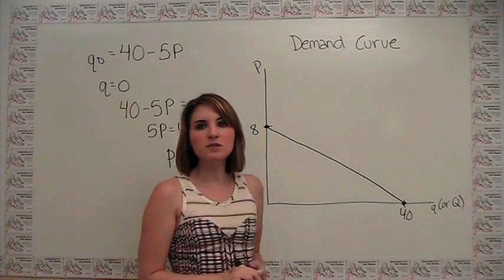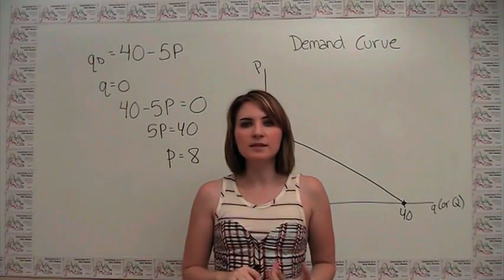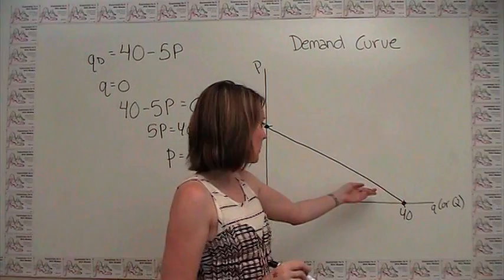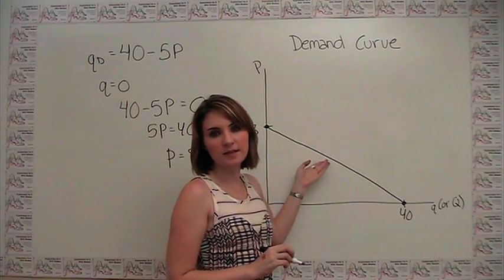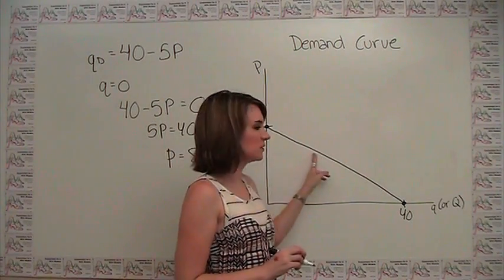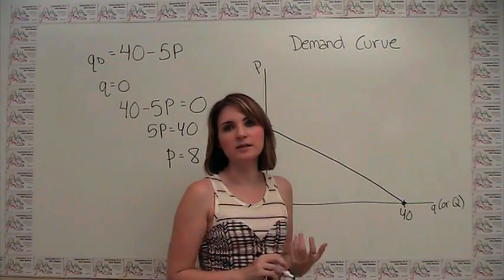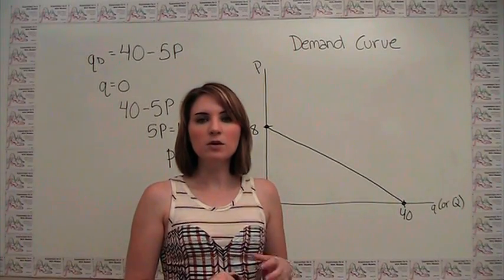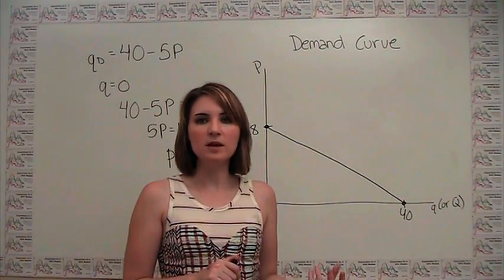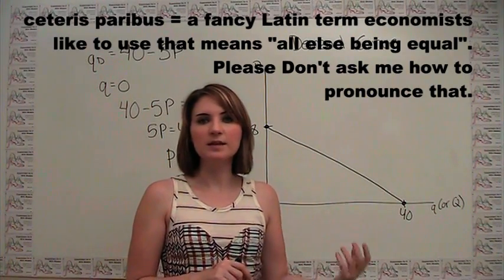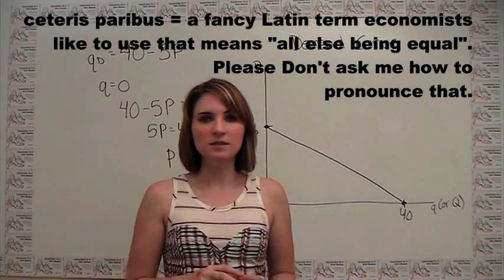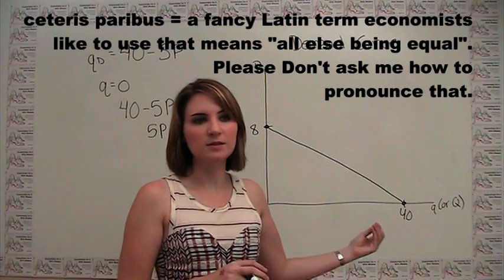Notice here you get a downward sloping line, which isn't surprising given the law of demand that we talked about earlier. As the price of an item goes up, consumers are demanding less of it. Or vice versa, as the price of an item goes down, consumers are demanding more. Notice here that we're holding everything else that could possibly impact demand. We'll come back and talk about this in a little while. Things like income, tastes, expectations. We're holding all of those things constant and just thinking about how price affects quantity demanded.